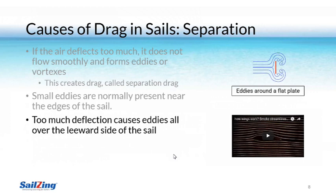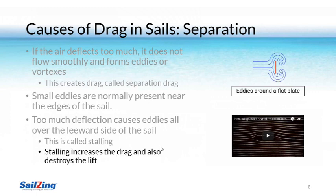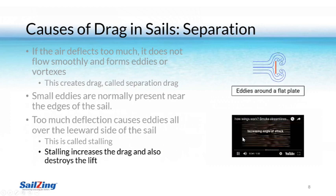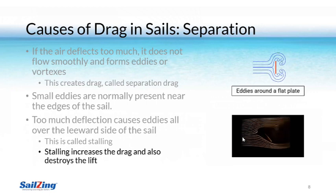However, if we sheet our sail in too much, bear off too far, or if the sail has too much curvature, eddies will form all over the leeward side of the sail. This is called stalling. Stalling destroys the lift and increases the drag. Watch this video of an airplane wing as the angle of attack is increased. Look how the flow starts to separate on top of the wing, and look at the beginning of the vortexes forming at the trailing edge. Now the flow is pretty well separated and you can see some major vortexes behind the wing.